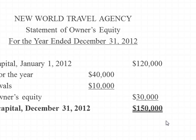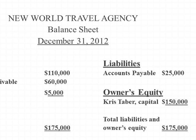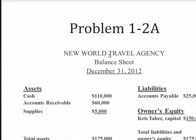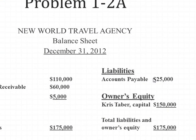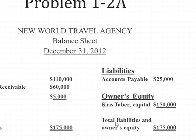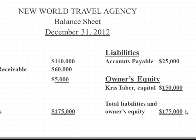The next statement we're going to create is the balance sheet. The balance sheet is just like the accounting equation. We list the name of the company, the name of the statement, and the balance sheet is for December 31, 2012 only. We list assets, liabilities, and owner's equity. Assets include cash $110,000, accounts receivable $60,000, and supplies $5,000, for total assets of $175,000. For liabilities, we had $25,000 in accounts payable. The Chris Tabor capital of $150,000 came from the statement of owner's equity. Adding these two totals gives us total liabilities and owner's equity of $175,000. Assets equal liabilities plus owner's equity — $175,000 equals $175,000. Our balance sheet is in balance.